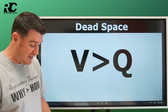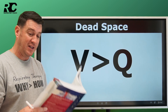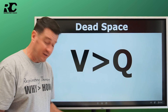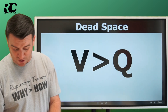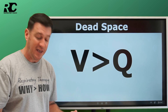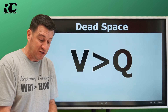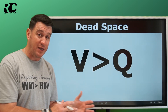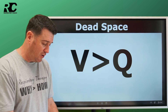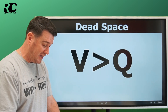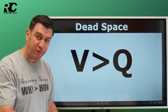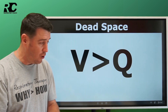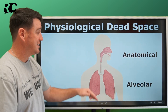Now referring to Egan's, the 13th edition, chapter 11, page 239 — the ventilation chapter. This book is somewhere around 1,600 pages and dead space is first talked about on page 239, showing what an important principle it is. Egan's identifies two different types of dead space: anatomical and alveolar.